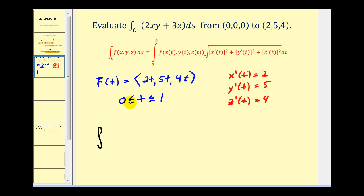Limits of integration would be from zero to one. Now we're going to go ahead and rewrite the given function in terms of t. So we'll have two times x times y, so we'll have two times 2t times 5t plus three times z, which would be three times 4t.